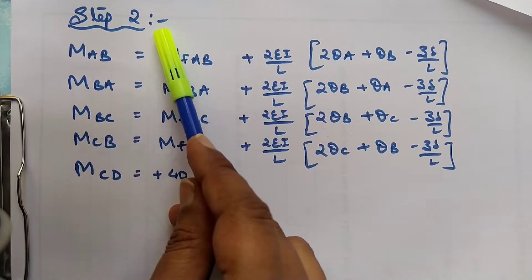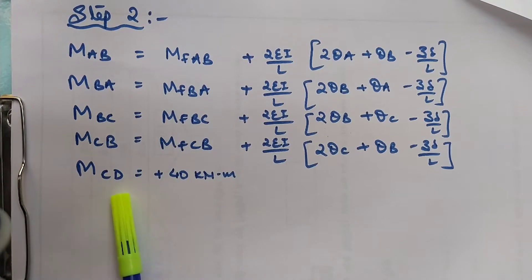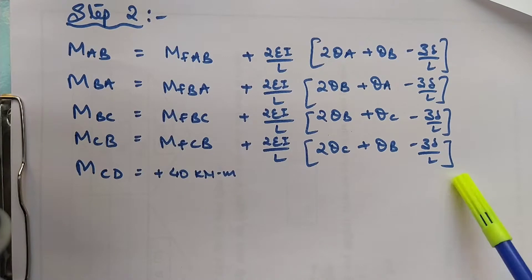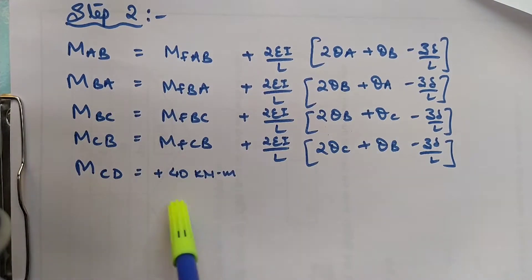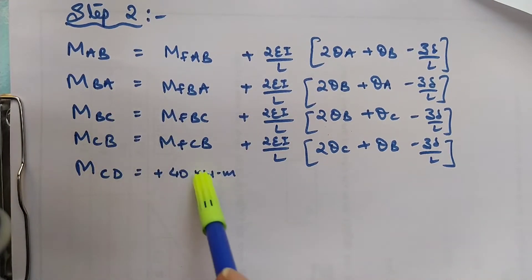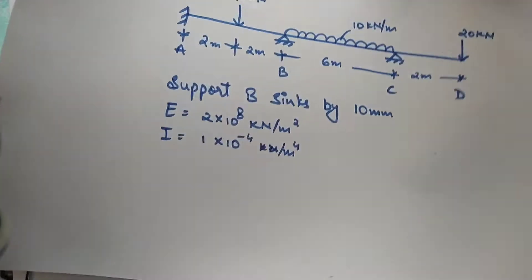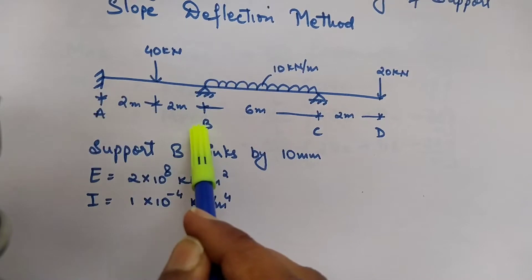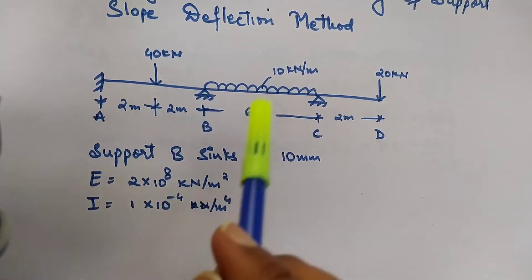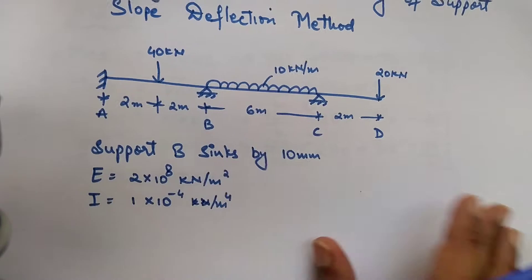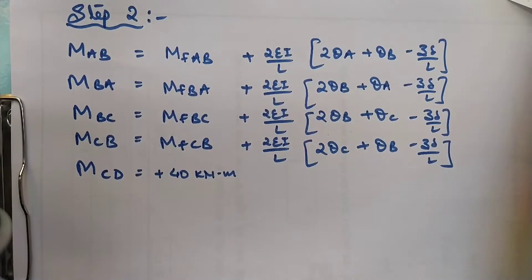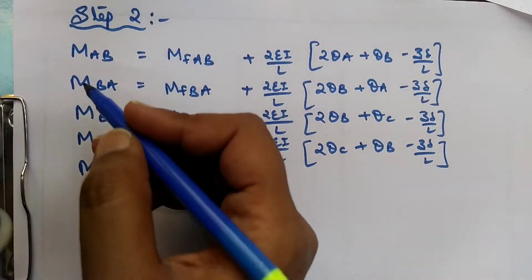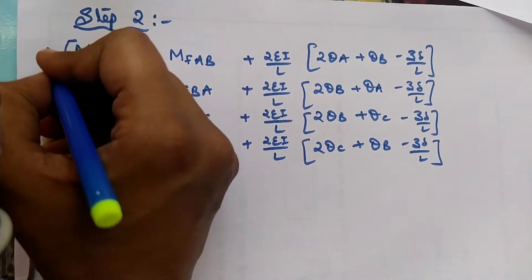Step two: we will be writing all the slope deflection equations. For all the members, we check the length and EI values. All EI values are the same, so for the length, whatever is given — four, six, two — we will be substituting those values only, so the chances of mistakes are less.